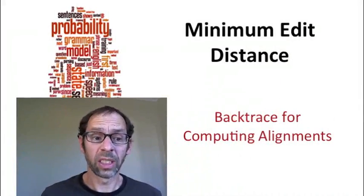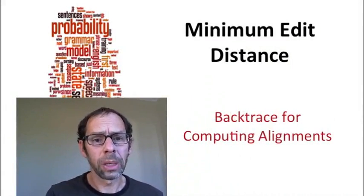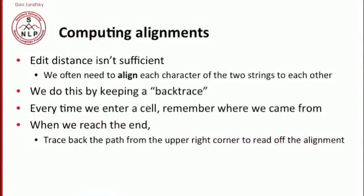Knowing the edit distance between two strings is important, but it turns out not to be sufficient. We often need something more, which is the alignment between two strings. We want to know which symbol in string x corresponds to which symbol in string y. This is going to be important for any application of edit distance, from spell checking to machine translation, even in computational biology.